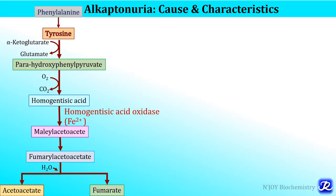What is the cause of alkaptonuria? In phenylalanine and tyrosine metabolism, the enzyme homogentisic acid oxidase converts homogentisic acid to maleylacetoacetate. If there is homogentisic acid oxidase deficiency, homogentisic acid cannot be converted and its levels build up in the blood and it is excreted in the urine, leading to various characteristic features of alkaptonuria.